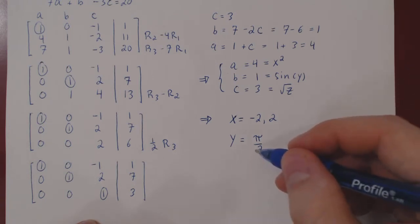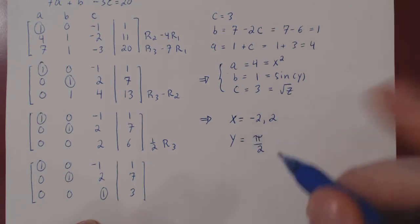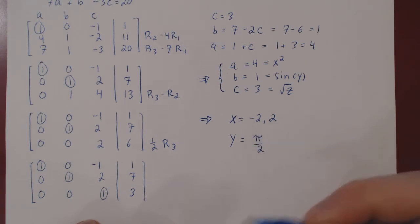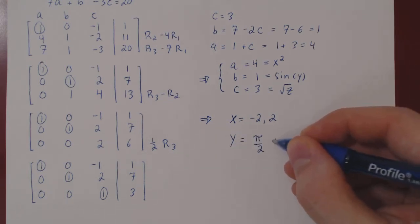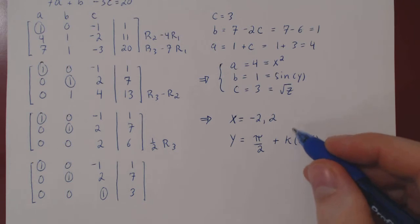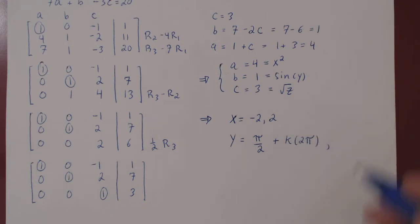But you can add to pi over 2 any integer multiple of 2 pi, and you will return at the very same position. So we'll have an infinite number of answers for y. We write this as y equals pi over 2 plus k times 2 pi, where k can be any integer value.